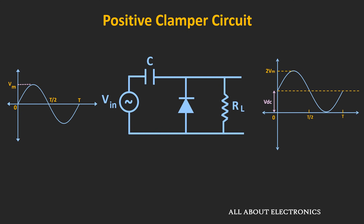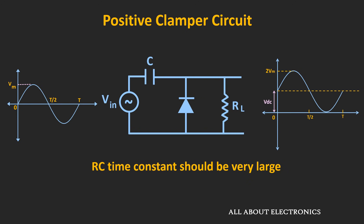Let us analyze this circuit and find out how we get this type of waveform. But before we do that, here we are assuming that the RC time constant of the circuit is very large. So if T is the time period of the signal, then the RC time constant of the circuit should be much larger than this time period — or in general, it should be at least 10 times more than the time period of the signal. Considering this assumption, let us analyze this circuit.